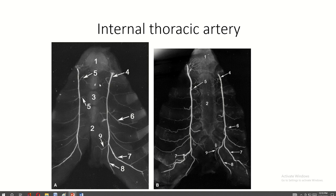This is the contrast X-ray showing the internal thoracic artery. The epigastric branch, the musculophrenic branch, the anterior intercostal branch, and the perforating branch are all visible.